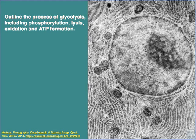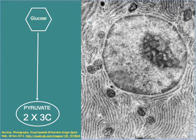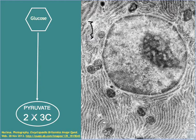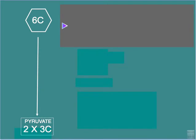Welcome. Today we outline the process of glycolysis, including phosphorylation, lysis, oxidation, and ATP formation. Glycolysis occurs in the cytoplasm of cells. It can be summarized as the breakdown, or lysis, or splitting of glucose — a six-carbon molecule — into two three-carbon molecules of pyruvate, or pyruvic acid.